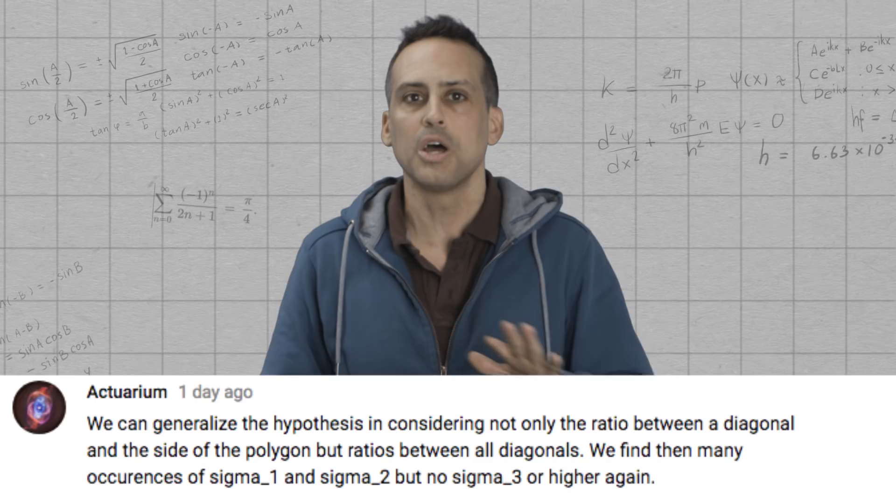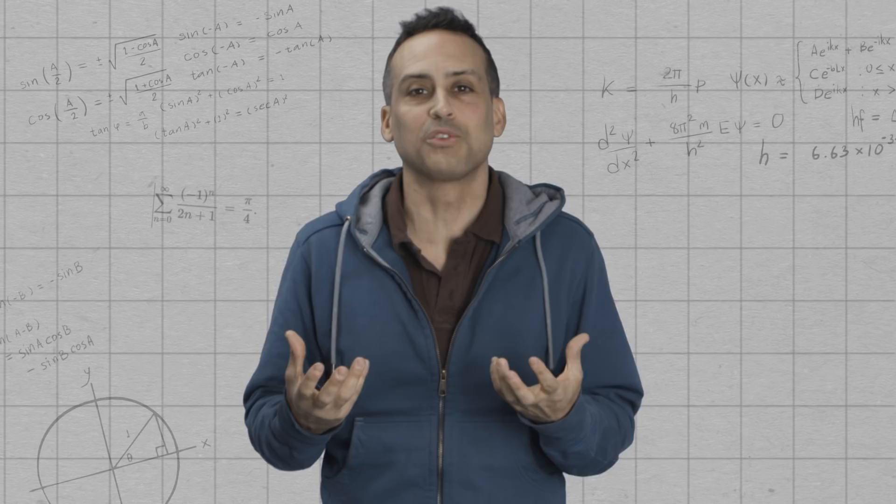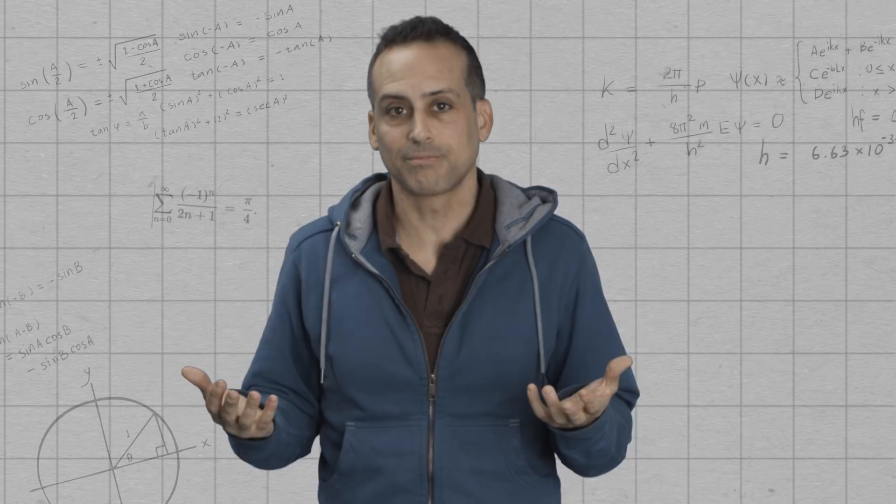Now, again, if that's true, that's kind of suggestive that there might not be another metallic ratio that shows up, which only intensifies my interest in wanting to find a proof that that equation that I mentioned earlier in the comments doesn't have a solution.